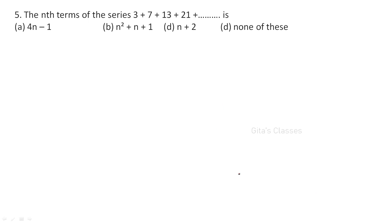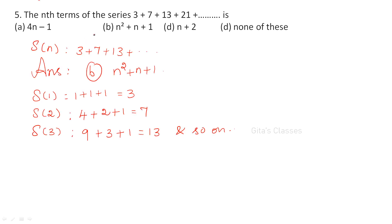For objective questions, you need not do all these steps; that is only required for descriptive answers. Next, for the nth term of the given series, use trial and error — just substitute n = 1, 2, etc. in all the options. The answer will satisfy only option B: n² + n + 1, because S(1) = 3, S(2) = 7, S(3) = 13, and so on.